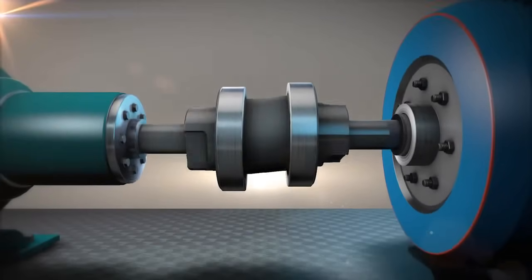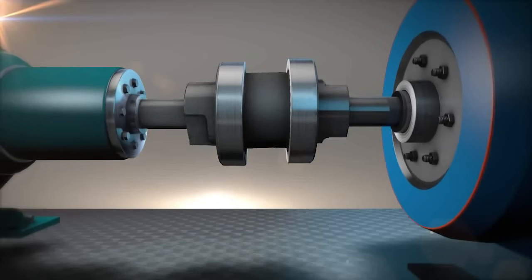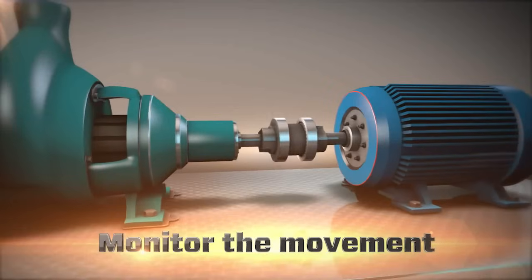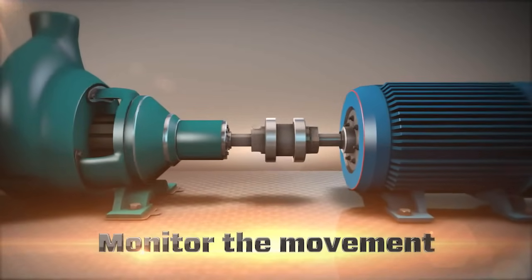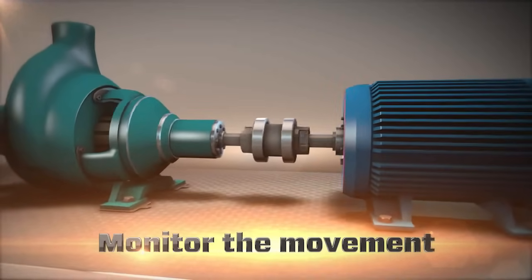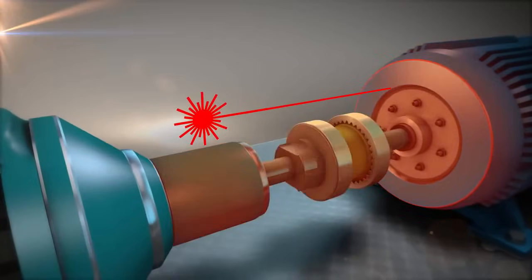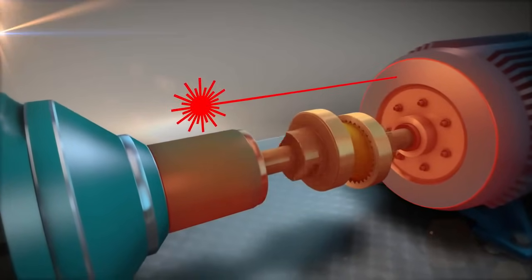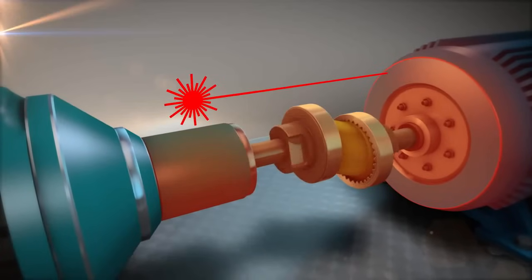To do this, we need to determine the amount of movement that occurs between the two shaft center lines. The best of several ways to determine this information is to monitor the movement. We track the positional change of the machines continuously from the cold to the hot condition, or vice versa.